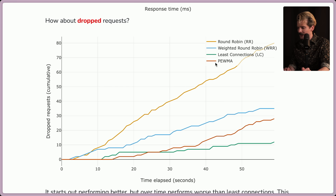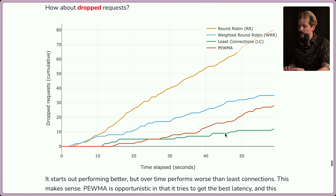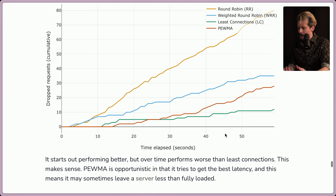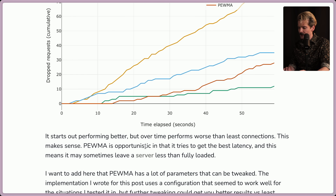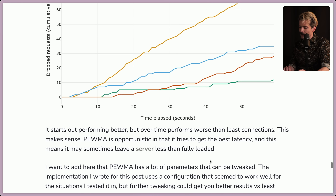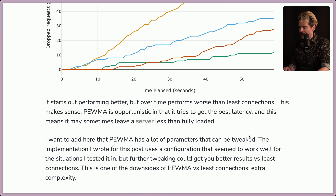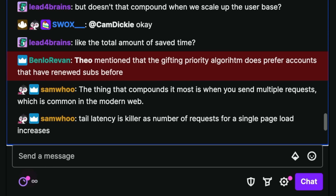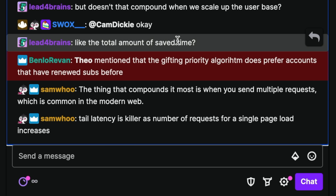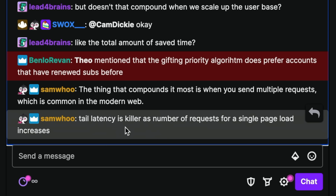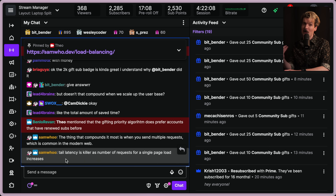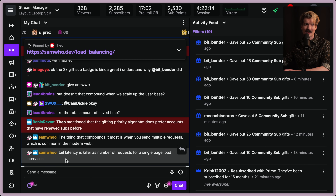Regarding dropped requests, PEWMA is actually dropping more than least connections did. It's opportunistic — it tries to get the best latency but sometimes leaves servers less fully loaded. PEWMA also has a lot of parameters that can be tweaked; the configuration used here worked well for the tested situations but further tweaking could get better results versus least connections. This extra complexity is one of the downsides of PEWMA. The thing that compounds it most is when you send multiple requests, which is common in the modern web — tail latency is a killer as the number of requests per page load increases, like Twitch's homepage making a huge number of GraphQL requests.